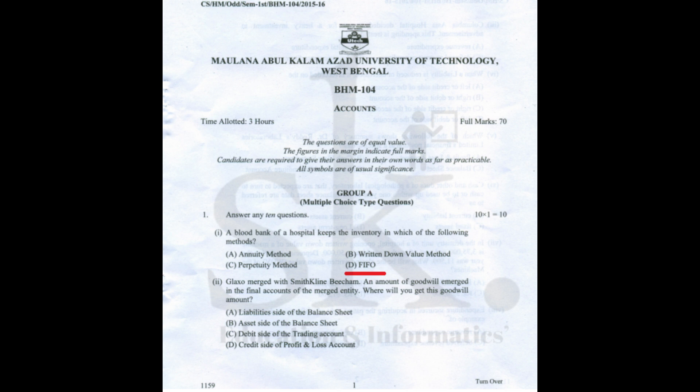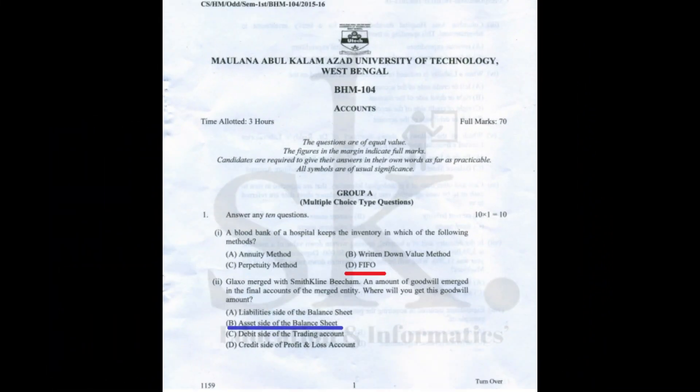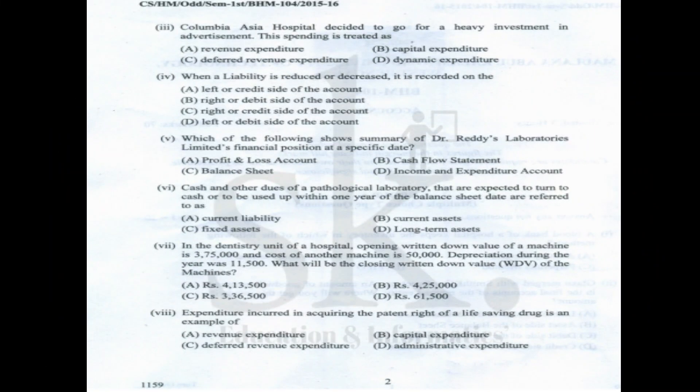Question number two: Glaxo merged with SmithKline and goodwill emerged in the final accounts of the merged entity — goodwill will normally be shown in the balance sheet on the asset side. The correct option is B.